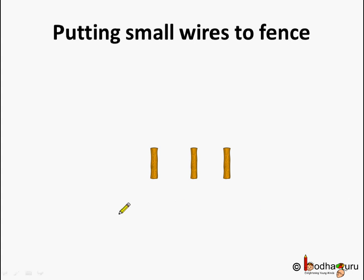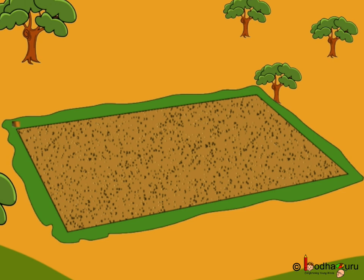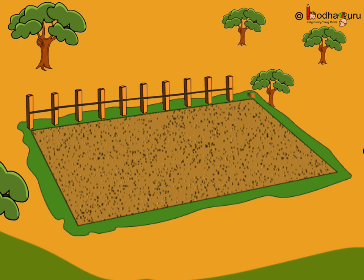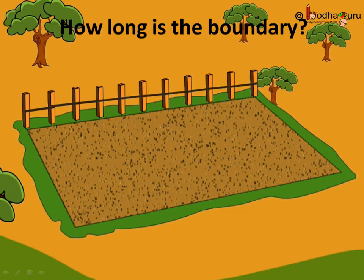He put poles around the farm and this is the way he started putting the small pieces of wires in order to fence his farm. Now he started putting the piece of wires to make the fence. He put 1, 2, 3, 4, 5, 6, 7, 8, 9, 10 pieces of wire on this side.